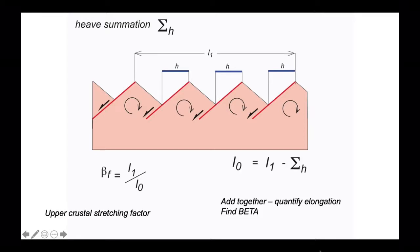So here's how this works. We're trying to find the upper crustal stretching factor, and that's simply the final length that we observe today for a length of crust divided by its original length. Let's assume that we can make a measurement from fault block to fault block across a domain of stretched crust.